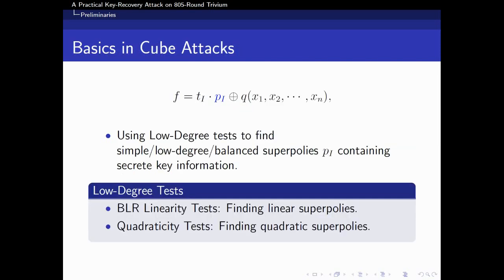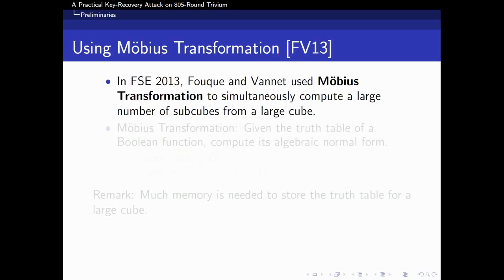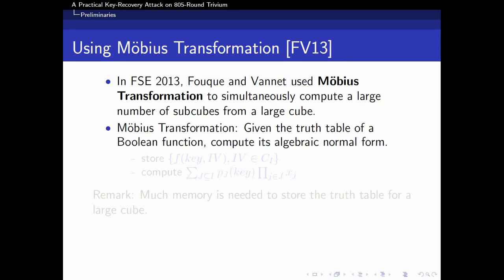Traditionally, low-degree tests such as BLR linearity tests and quadraticity tests are used to find balanced superpolys containing secret key information. In FSE 2013, Fouque and Vannet used Möbius transformation to simultaneously compute a large number of subcubes from a large cube.